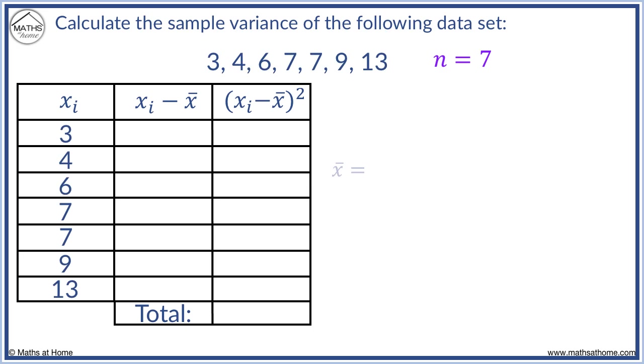We calculate the mean by adding the data values and dividing by n. n equals 7. Evaluating this, we obtain a mean of 7.